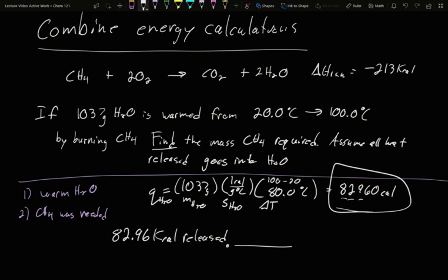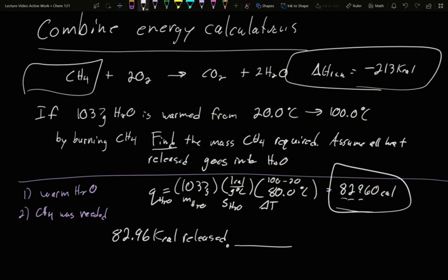Well, my balanced reaction says that for every one CH4, I should get 213 kcal. So I can use the delta H of the reaction to convert from energy to methane. So 1 mole of methane. Calculate this through, we'll find that we should have had 0.3895 mole of CH4. To get just about 83 kcals of energy, while a full mole burning would have given me 213, I didn't need that much. I needed less than a full mole. And that's what we find.